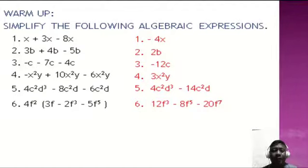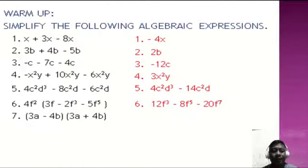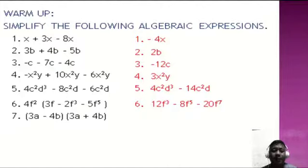Number seven: quantity 3a minus 4b times quantity 3a plus 4b. Take note: you are multiplying the sum and difference of two binomials, which means the product is simply the difference of two squares. So we have 9a squared minus 16b squared.